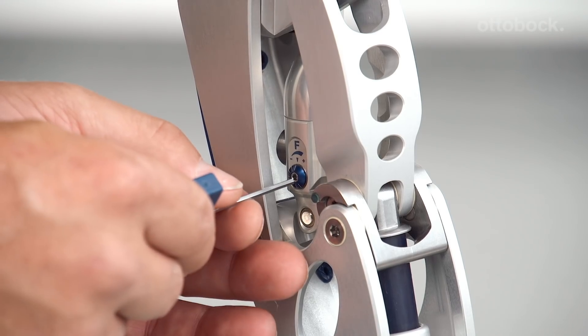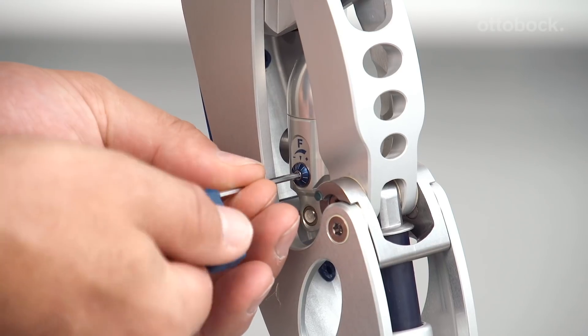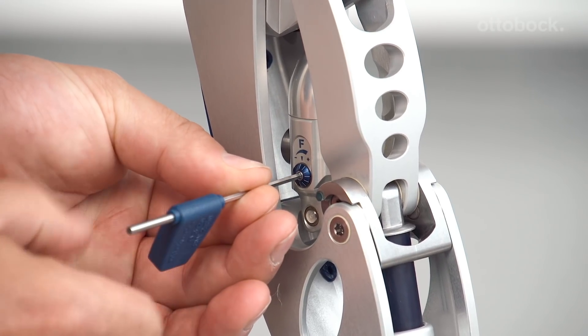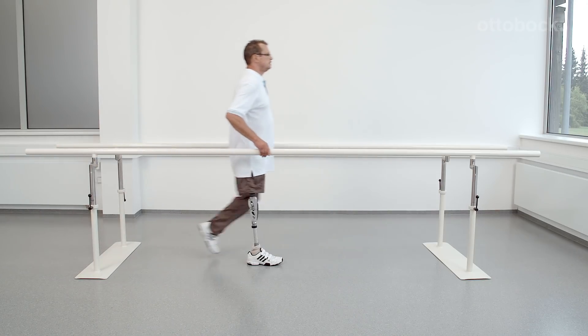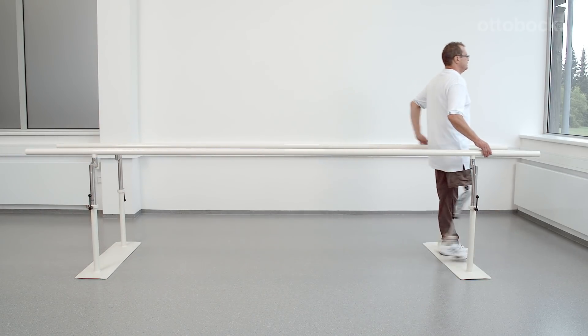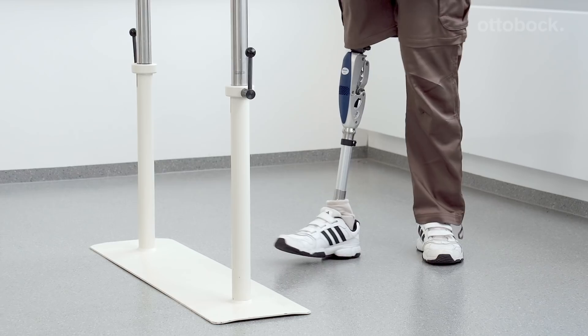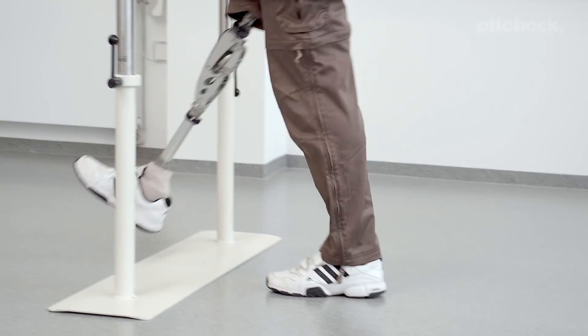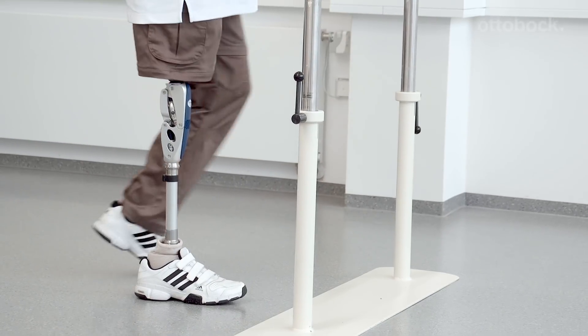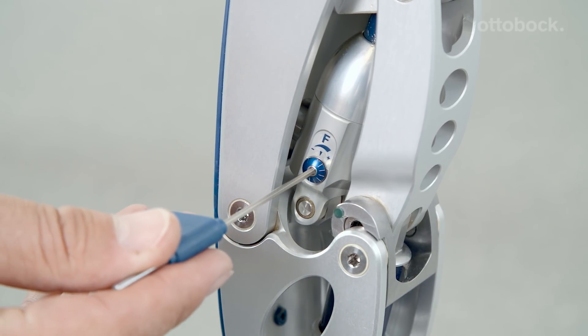At this point, the flexion damping is shown at the maximum. As shown in this sequence, the knee flexion is too little for the user. The shank swings forward too quickly, which results in a hard extension stop and little ground clearance in the middle of the swing phase. This results in an increased risk of tripping.